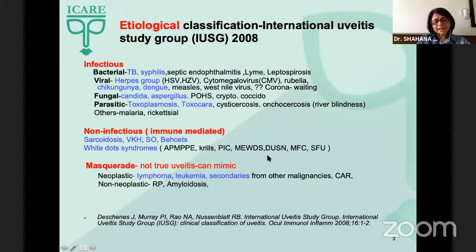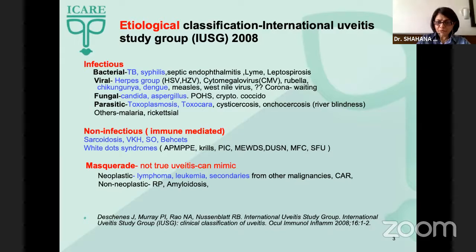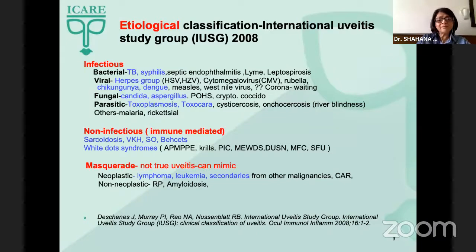Etiologically classified, posterior uveitis may be infectious or non-infectious, and we sometimes include the masquerades, which is not a true uveitis but can mimic a posterior uveitis. We always have to have a high index of suspicion, especially when we are looking at extremes of age group.